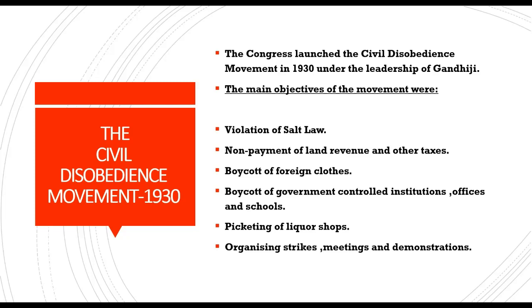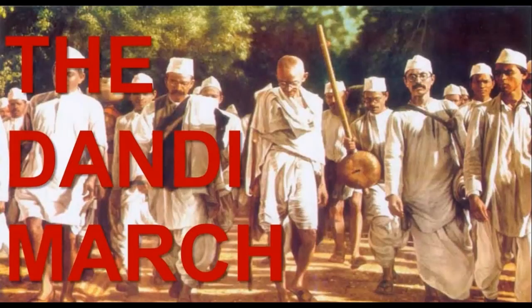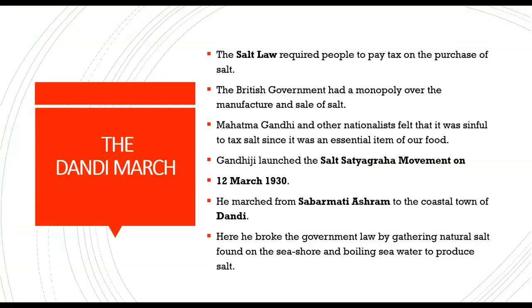Gandhiji started the movement by the violation of the salt law on the sea coast at Dandi. The salt law required people to pay tax on the purchase of salt. The British government had a monopoly over the manufacture and sale of salt. Mahatma Gandhi and other nationalists felt that it was sinful to tax salt since it was an essential item of food.